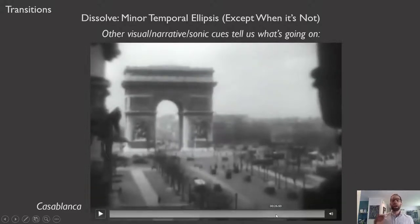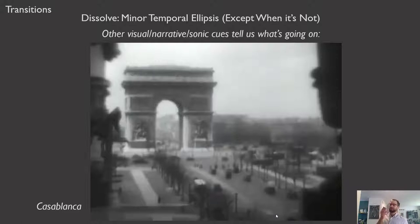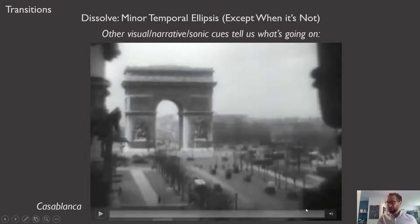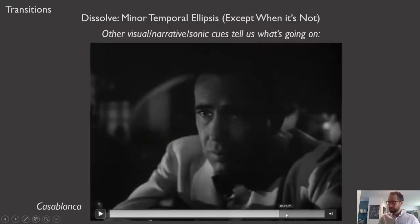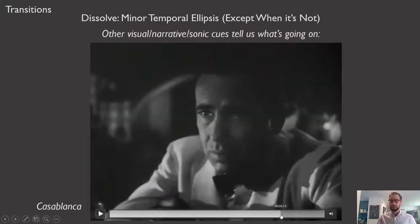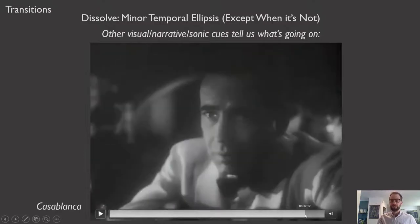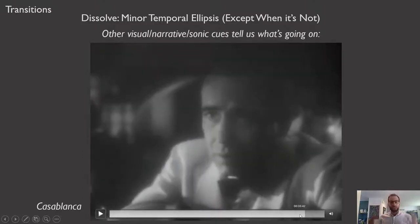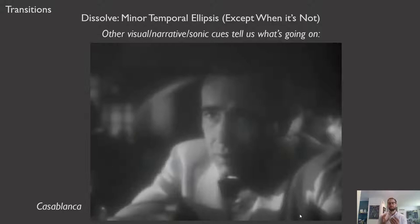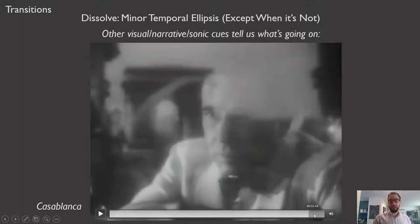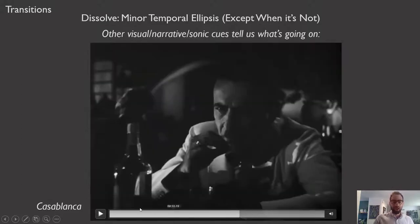Even if you haven't seen Casablanca, you understand that this is not conveying that a few minutes have passed. Even though it is technically a dissolve — not a fade out and fade in — there are other sonic, narrative, and visual cues that tell us this is not a mere temporal ellipsis but is in fact a flashback. How do we get the sense that it's a flashback? Many reasons.